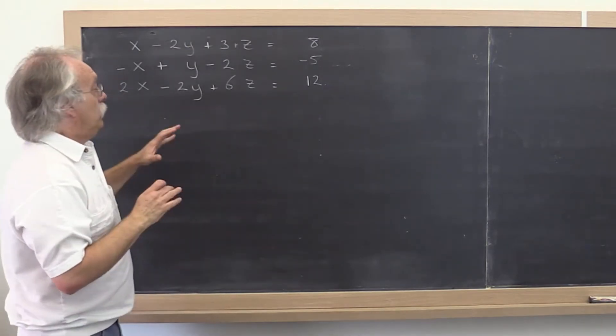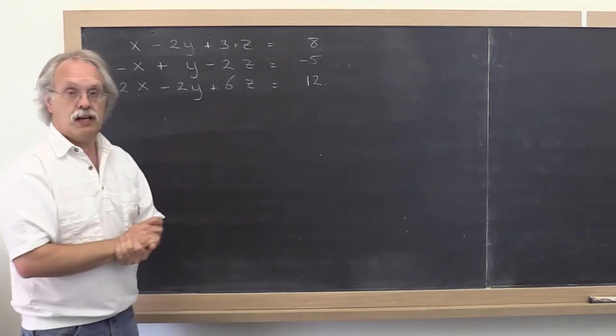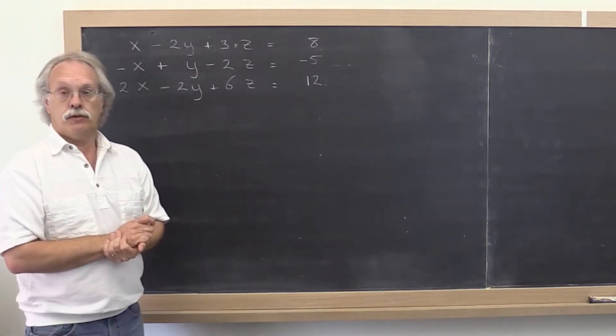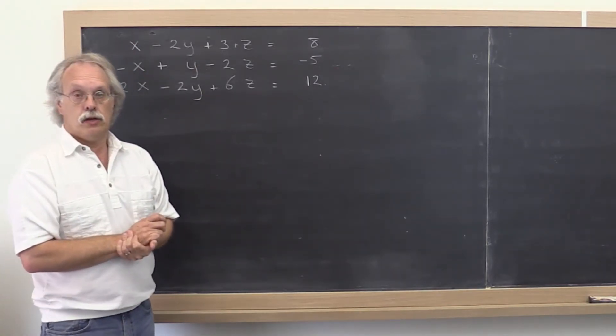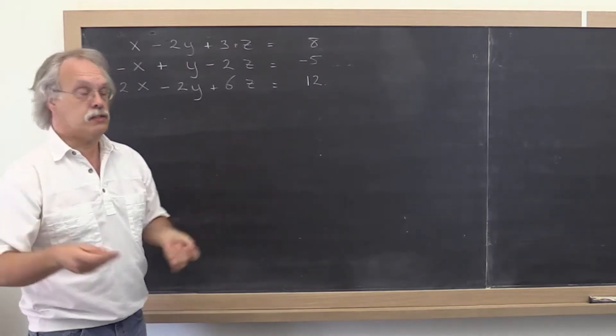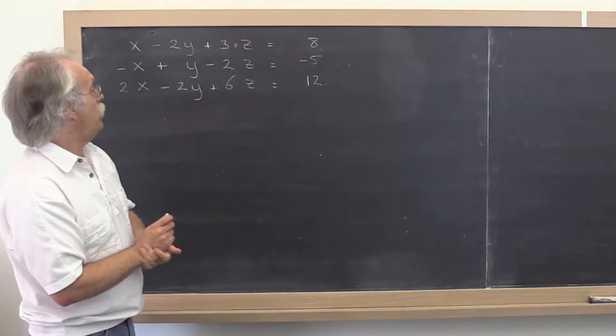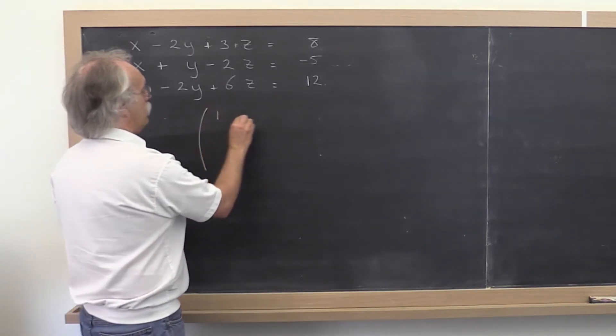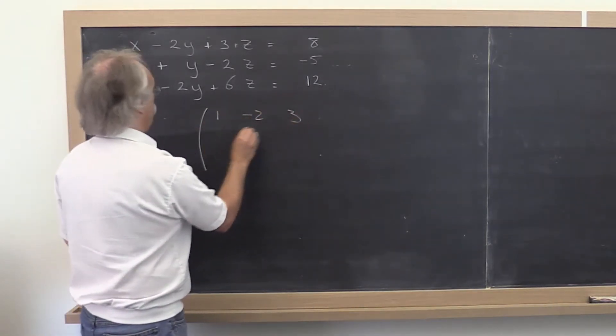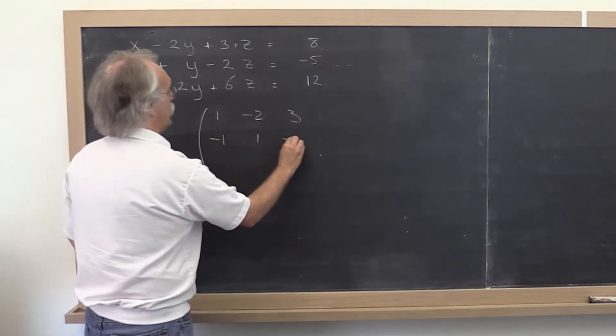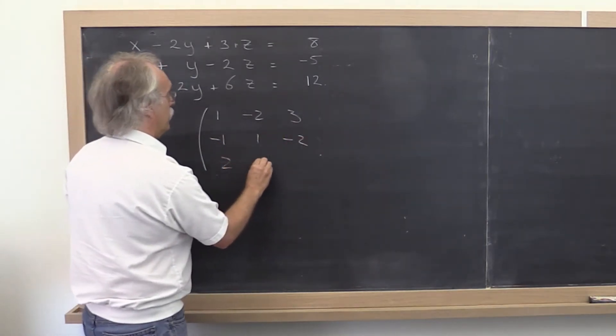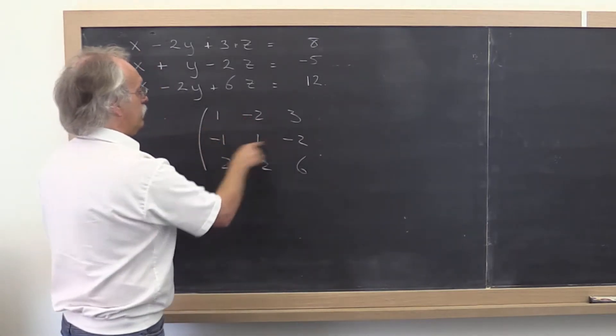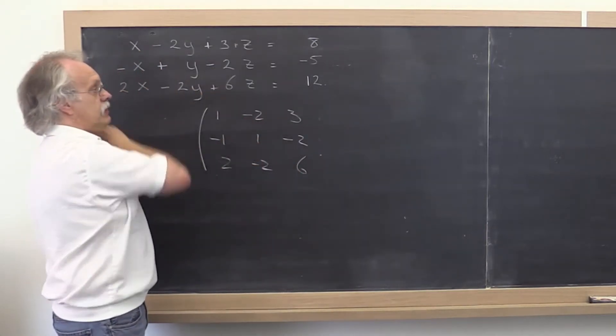Now because it was a lot of bother carrying all of these symbols x, y, and z around, what you were then told was to create a two-dimensional array with the coefficients. So we would end up with 1, minus 2, 3, minus 1, 1, minus 2, 2, minus 2, 6. And you recognize that this simply captures everything that's up here.